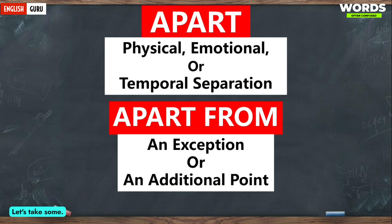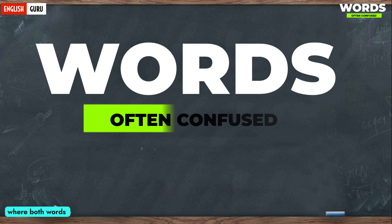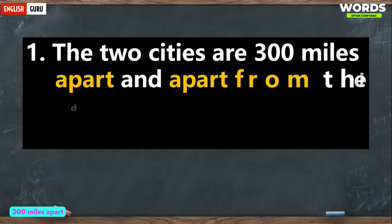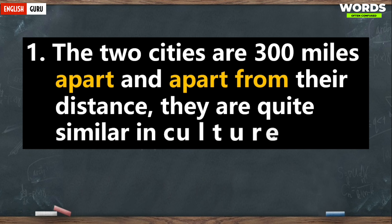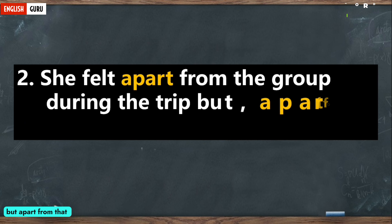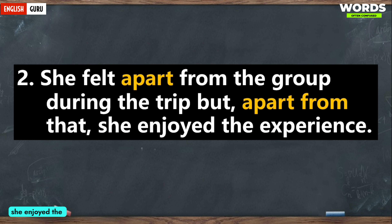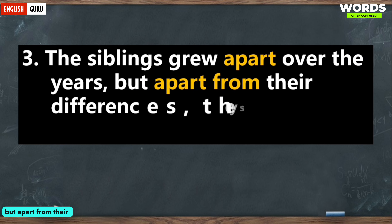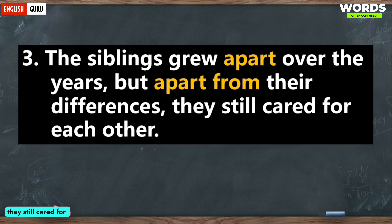Let's take some additional examples where both words are used in the same sentence. First: 'The two cities are 300 miles apart, and apart from their distance, they are quite similar in culture.' Second: 'She felt apart from the group during the trip, but apart from that, she enjoyed the experience.' Third: 'The siblings grew apart over the years, but apart from their differences, they still cared for each other.'